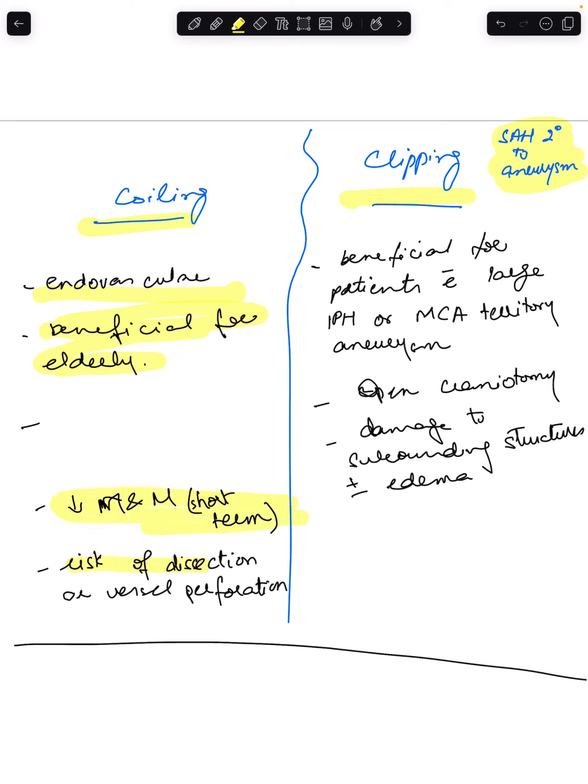But there is a risk of dissection or vessel perforation. Whereas in case of clipping, it is beneficial for patients with large intra-parenchymal hemorrhage or MCA territory aneurysm. Open craniotomy is done in this procedure.